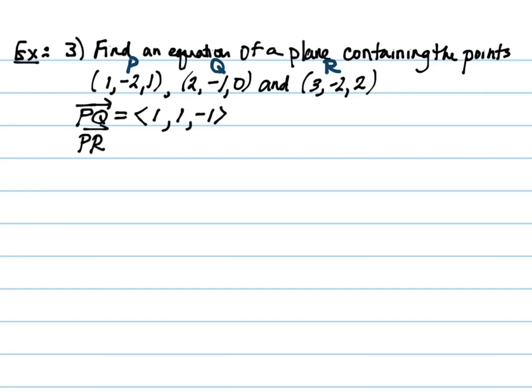So what we need to do is we need to actually find the vectors that correspond to a couple of these points and see if we can find the orthogonal vector to that. So we'll take vector PQ, so again that means point Q minus point P. So I have 2 minus 1 is 1, I have -1 minus -2, which would be also 1, and then I have 0 minus 1, which would be -1. And PR, I'll use that as my other vector. So vector PR would be, again, 3 minus 1 would be 2, I have -2 minus -2, which would be 0, and then 2 minus 1, which is 1.